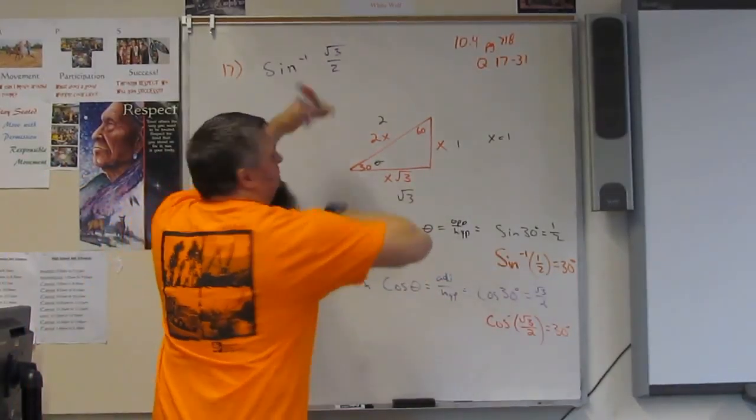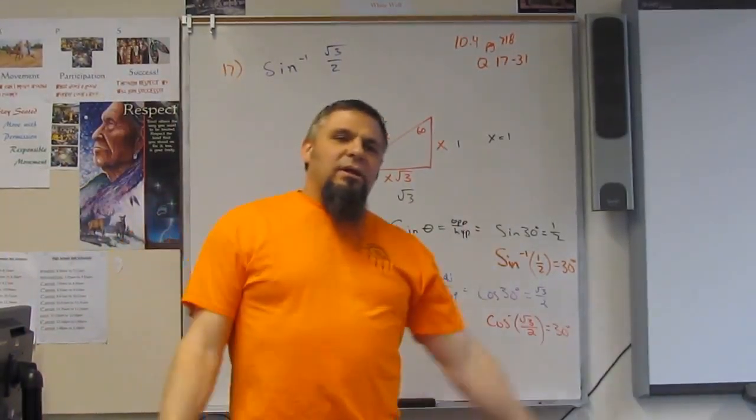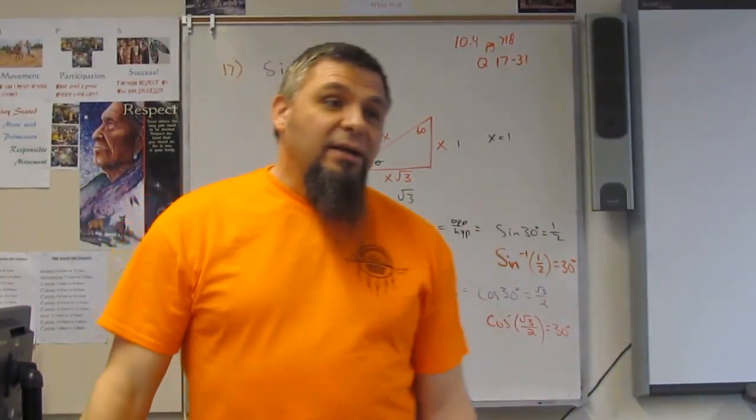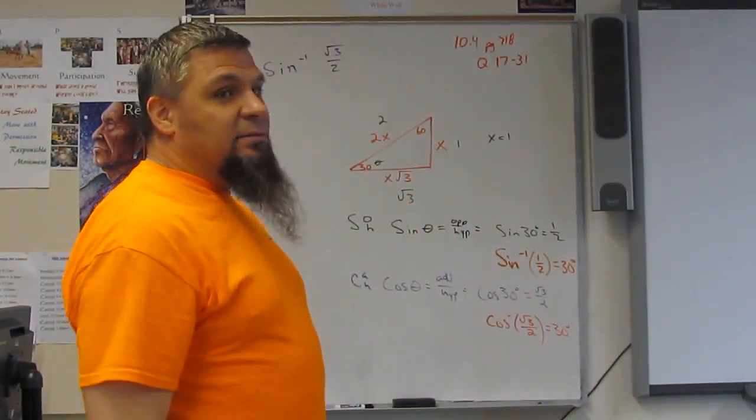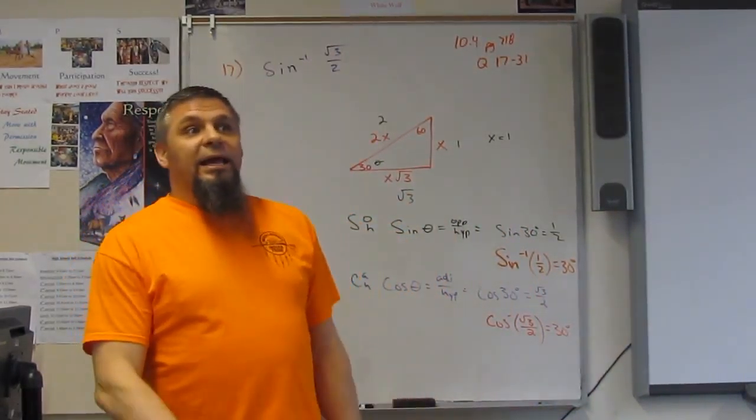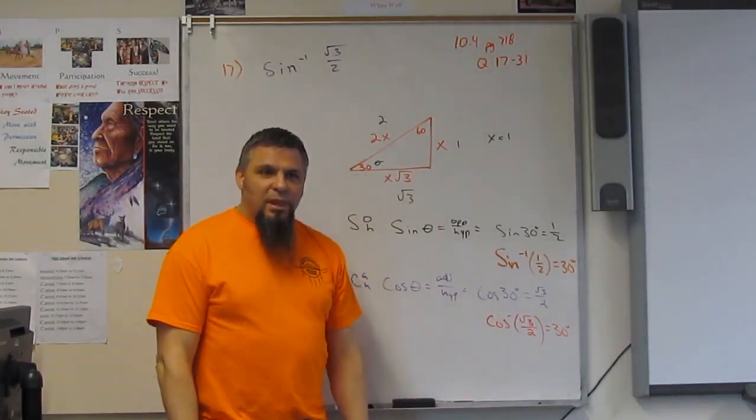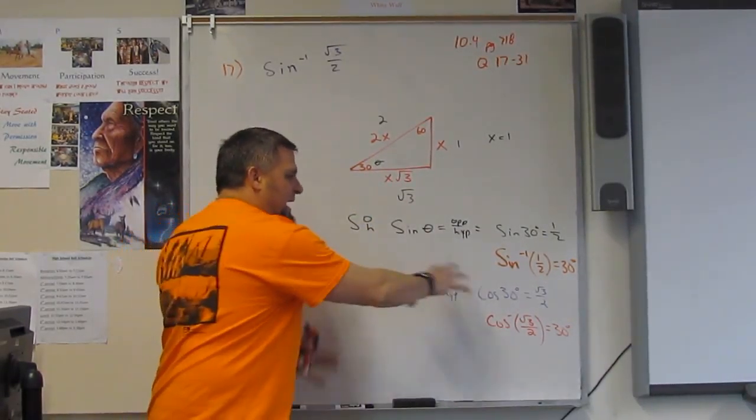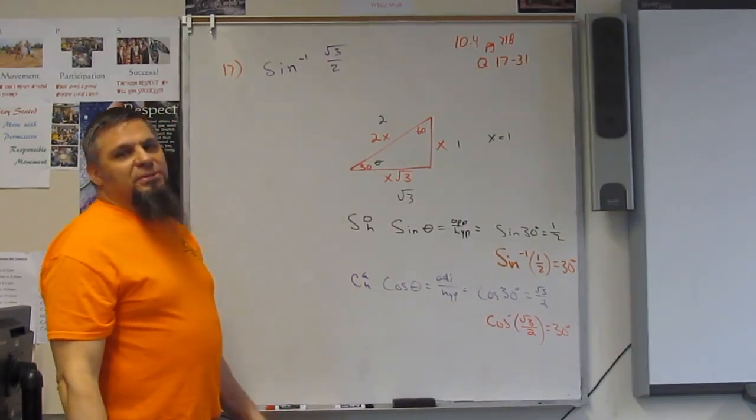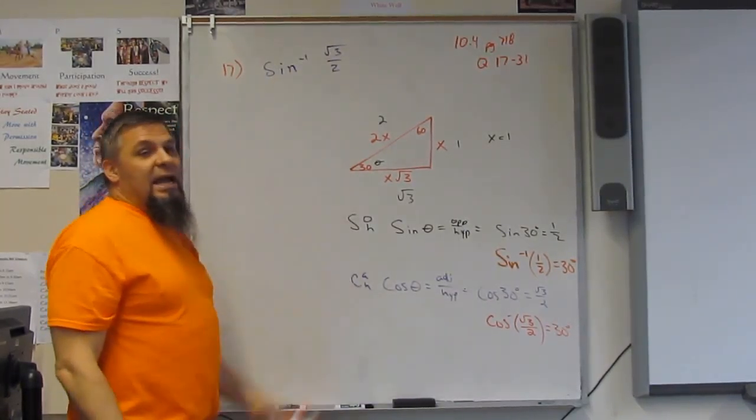And we can continue doing this for tangent, and then we can do it for cosecant, secant, and cotangent. And we could even do it for all the 60 degrees. And that's all by hand. Can you do it by hand? Absolutely. Could you do this one by hand? Absolutely.